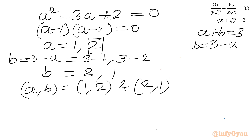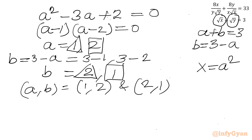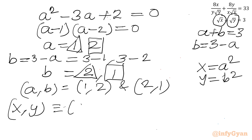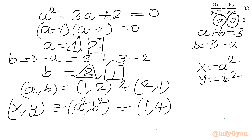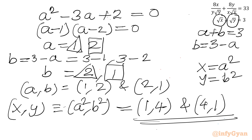Now the values of x and y. Our substitution was x equal to a squared and y equal to b squared. So I can write x equal to a squared and y equal to b squared. For (a, b) equal to (1, 2): x equals 1 squared equals 1, y equals 2 squared equals 4. For (a, b) equal to (2, 1): x equals 4, y equals 1. This is our final answer.